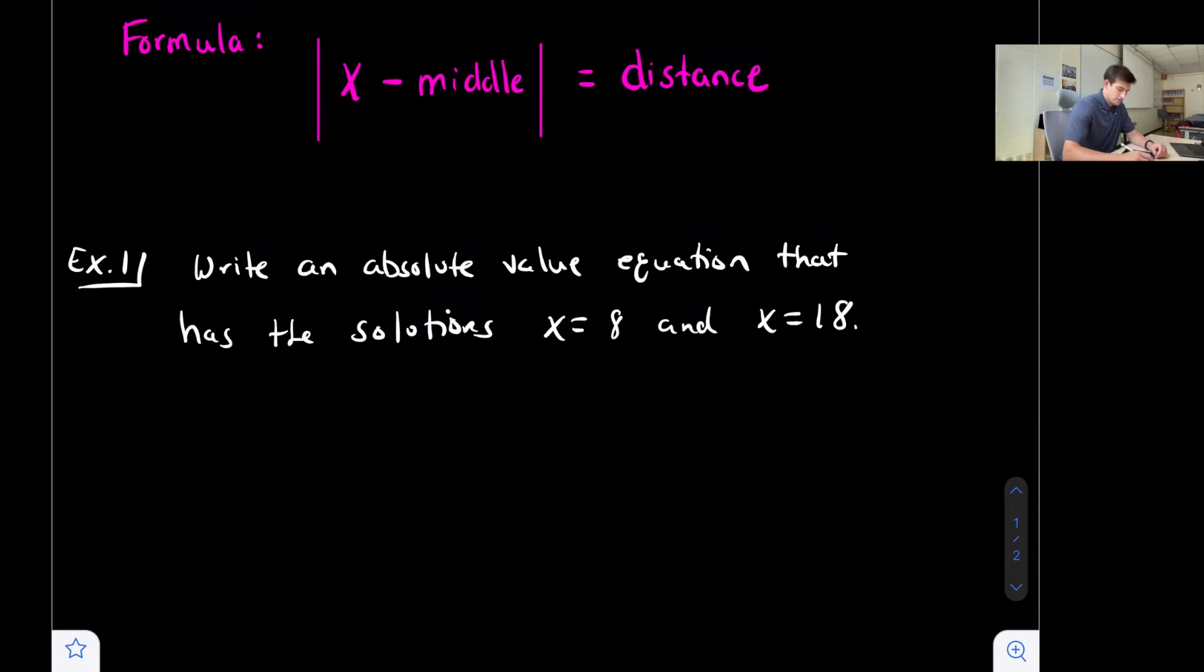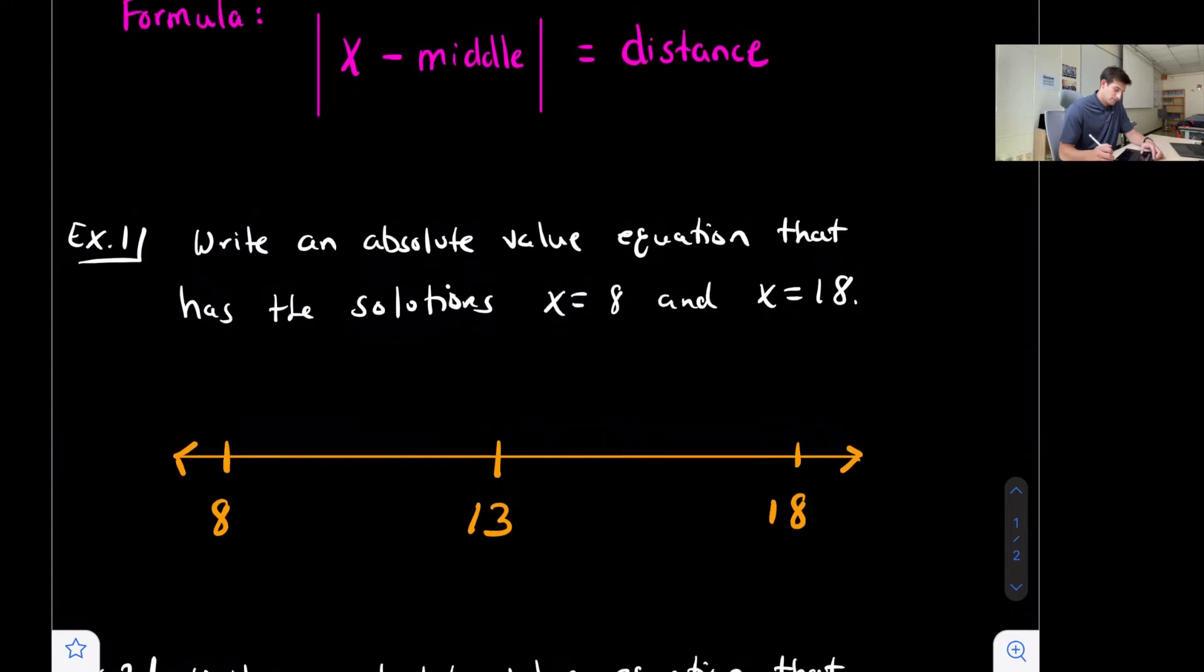Let's look at example number one. Write an absolute value equation that has the solutions x equals 8 and x equals 18. A good way to start is to draw a number line that lists your two solutions, one as a minimum and one as a maximum. So we have 8 and 18. The middle number right between 8 and 18 would be 13. How do we find that? 8 plus 18 is 26, 26 divided by 2 is 13.